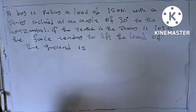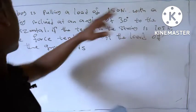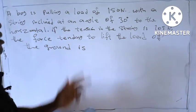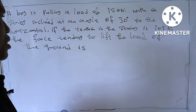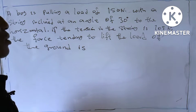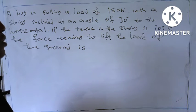The weight of the load is 150 with a string inclined at an angle of 30 degrees to the horizontal. If the tension in the string is 105, which is the force,